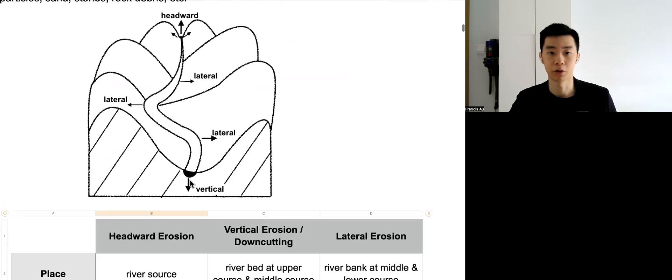The other one, we have vertical erosion or down cutting, meaning the river bed is being eroded by the river sediment or the river water. Let's say I have some sediment over here making up the river bed. When I have erosion, it will be removing the sediment, so the depth of the river is going to increase. That's called vertical erosion, making the river channel deeper.